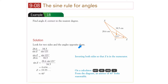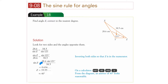Look for two sides and the angles opposite them. They started with little Z over sine Z equals 38.5 over sine 121, but you could just flip the whole thing at the beginning — inverting both sides so that Z is in the numerator. It's better to have the unknown in the numerator because it's easier to resolve. Just start with sine A over A equals sine B over B.